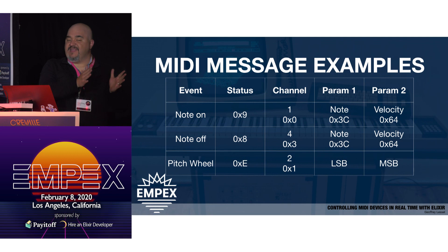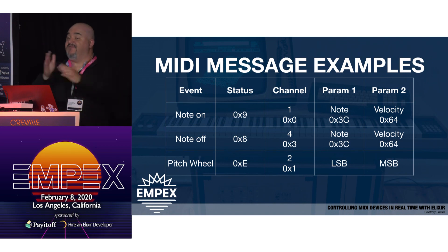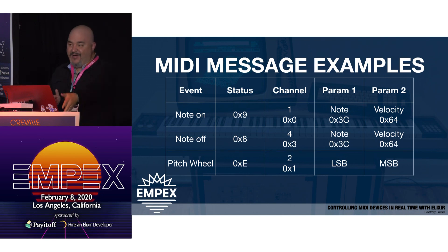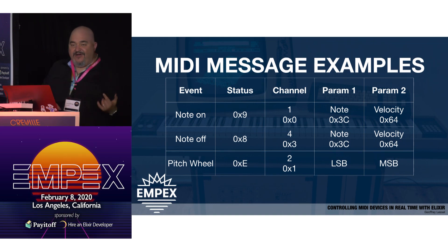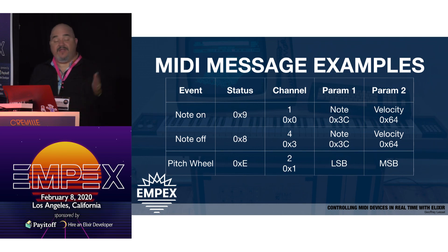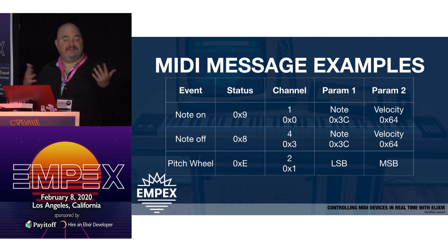Interestingly, these bytes are actually 7-bit bytes — there's always a zero in the front — which means there are only 127 different values you can send. So you can only hit at 127 different levels of hardness for velocity. Then there's note off, which is a similar idea with a different hex code. And there's a pitch wheel — you can bend pitches like on a guitar. That one has a least significant byte and most significant byte, so you can actually send 14 bits of information: 16,000 different values.